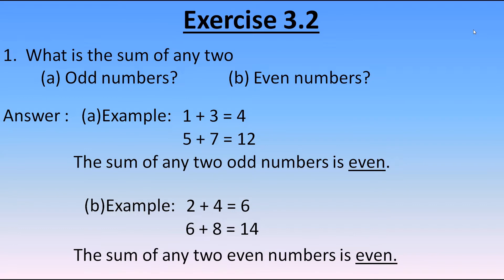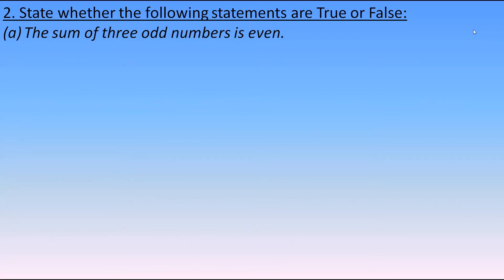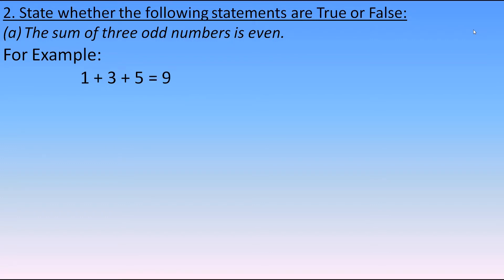Now let's move to the second question: State whether the following statements are true or false. We will discuss each statement and then write true or false. The first statement is: the sum of three odd numbers is even. Taking 1, 3, and 5 — their sum is 9, which is odd. Also 7 plus 9 plus 11 gives 27, which is also odd. So this statement is false.